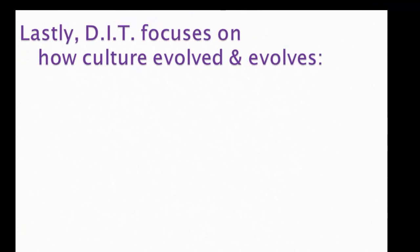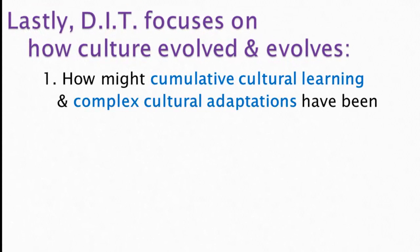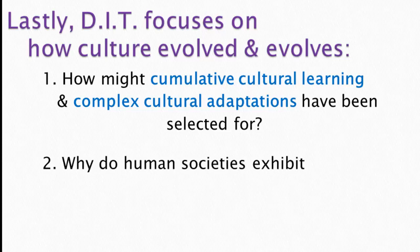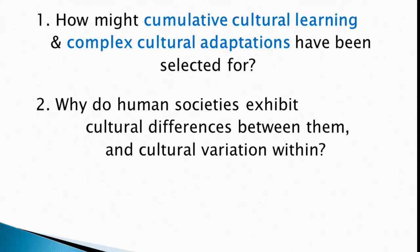Dual inheritance theory also focuses on how culture evolved and continues to evolve. One question is how cumulative cultural learning and complex cultural adaptations were selected for in the first place — a problem similar to how cooperation and altruism evolve — and they approach it using mathematical models. A second question is why human societies exhibit cultural differences both between and within groups, and they've developed models about how we imitate other people and how culture spreads.